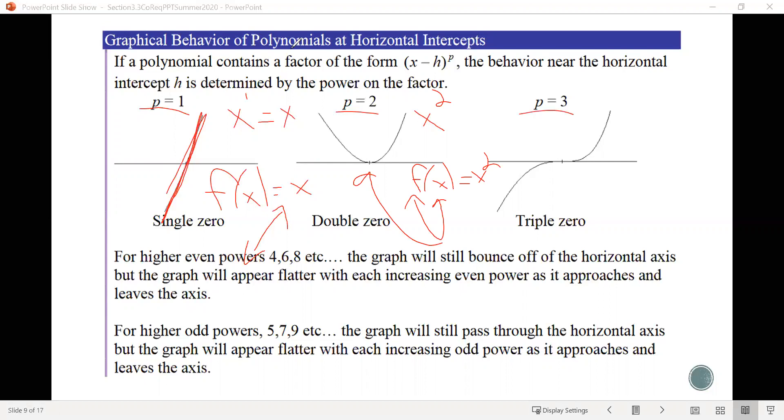And then finally, for p equals 3, the power is 3. That's like x cubed, which we know f of x cubed is our cubic function. The graph of that looks something like this, which is very similar to what we see. So the shapes or the behavior of these different multiplicities at particular horizontal intercepts are related to our toolkit functions.